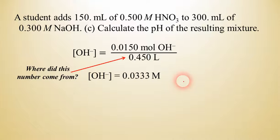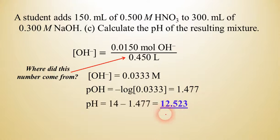So if we know that, then we're in the home stretch of the problem here. We just take the negative log of hydroxide to find the pOH. So that's 1.477. And once we know the pOH, we just subtract from 14, and we can get the pH.